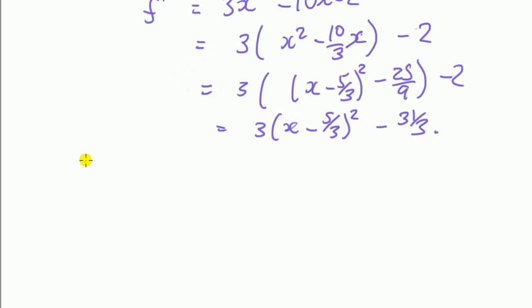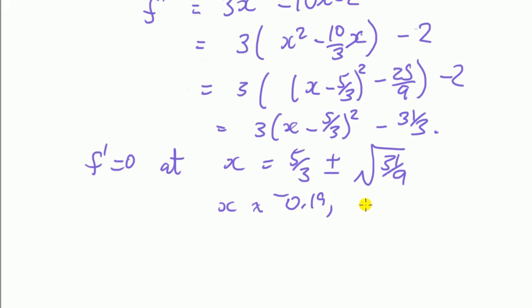Okay, so looking at this, we can see that then f, the derivative is zero at, and then just solve this thing, we should find that x is equal to 5 over 3 plus or minus the root of 31 over 9, so that's approximately minus 0.19 and plus 3.52.